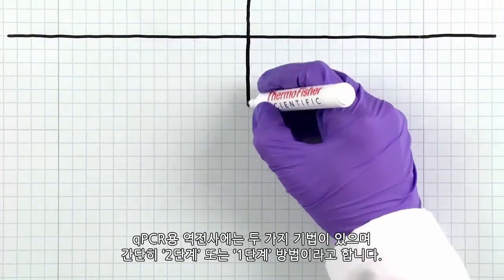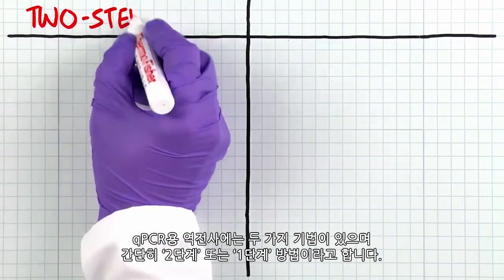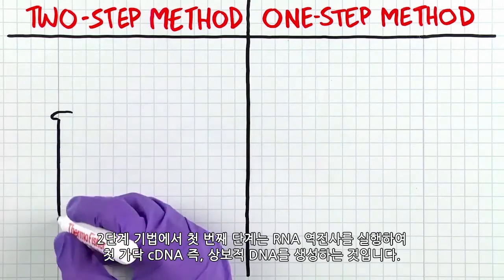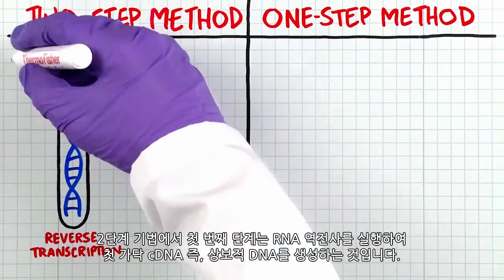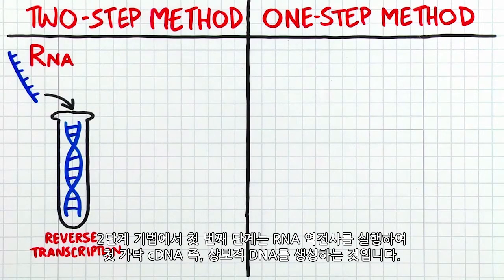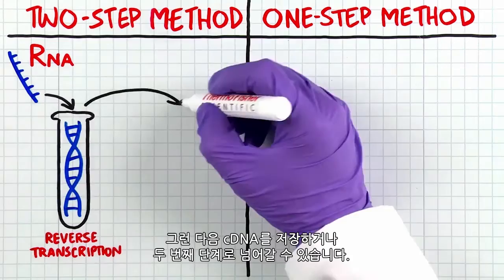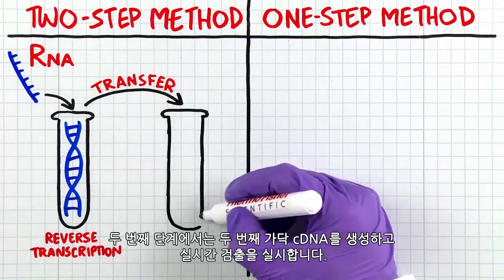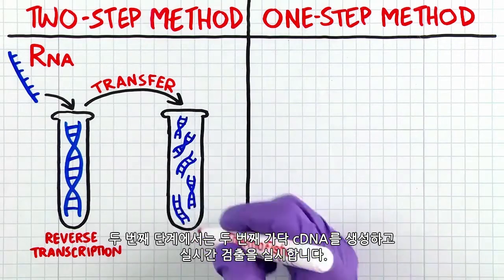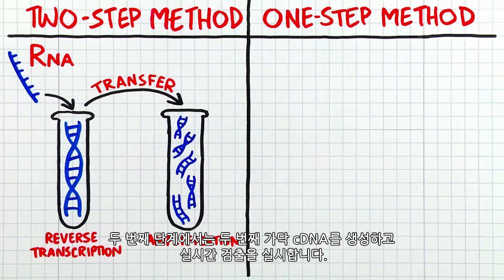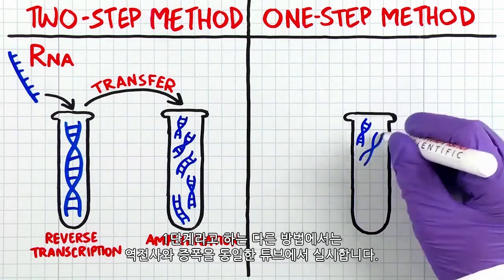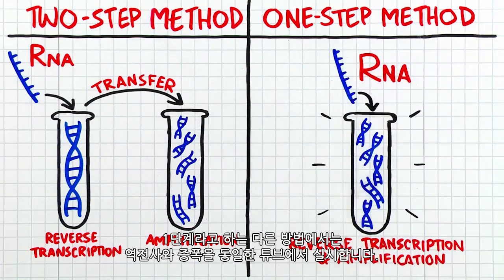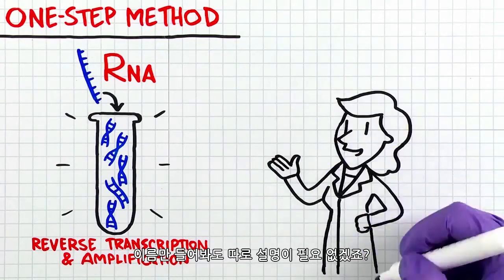There are two primary approaches to reverse transcription for qPCR, known informally as two-step or one-step methods. In the two-step approach, the first step is reverse transcription of the RNA to generate first-strand cDNA, or complementary DNA. The cDNA can be stored or moved to the second step, where second-strand cDNA is generated and real-time detection is performed. The one-step method is where the reverse transcription and amplification are performed together in the same tube.